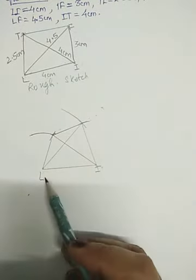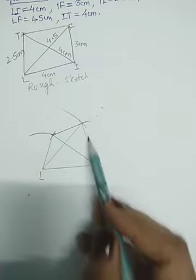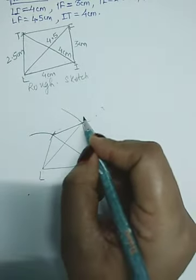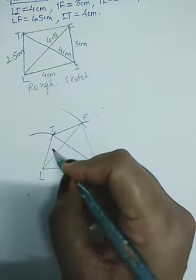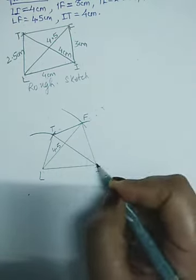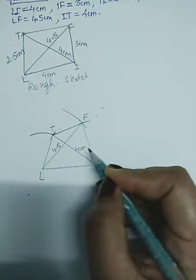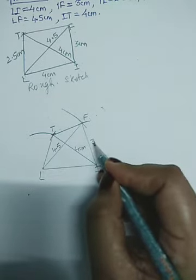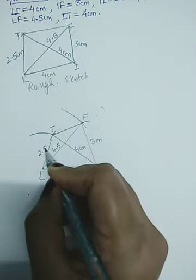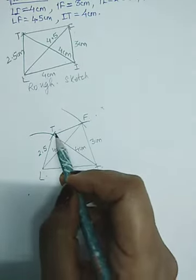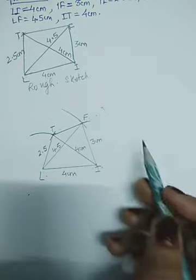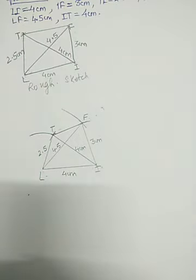This is how our quadrilateral LIFT is completed. Write down the measurements. This is 4.5. This another diagonal is 4 cm. This side is of length 3 cm. This is 2.5. LI is of 4 cm. If it is asked what is the length of TF, you can measure it with the ruler and then tell it.